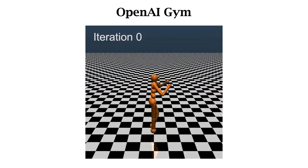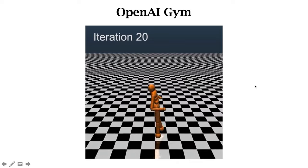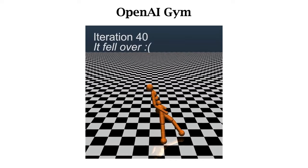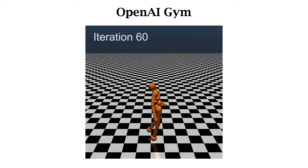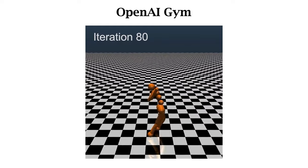You can use Gym to evaluate your algorithm and compare it with existing baselines. For example, you can use the humanoid environment for evaluation. In the beginning, the neural networks are randomly initialized, so the policy makes random decisions and the humanoid always falls.